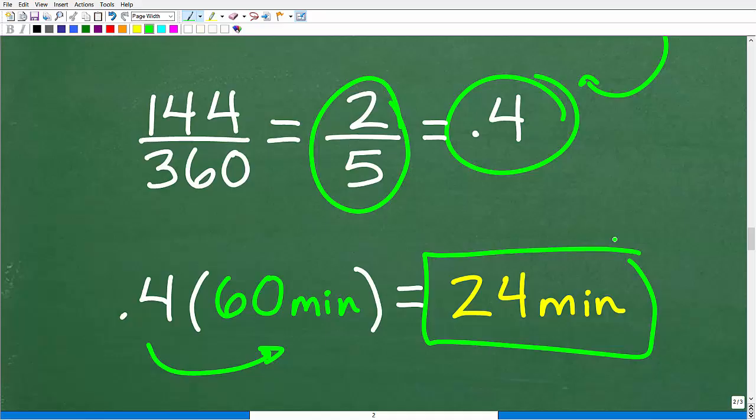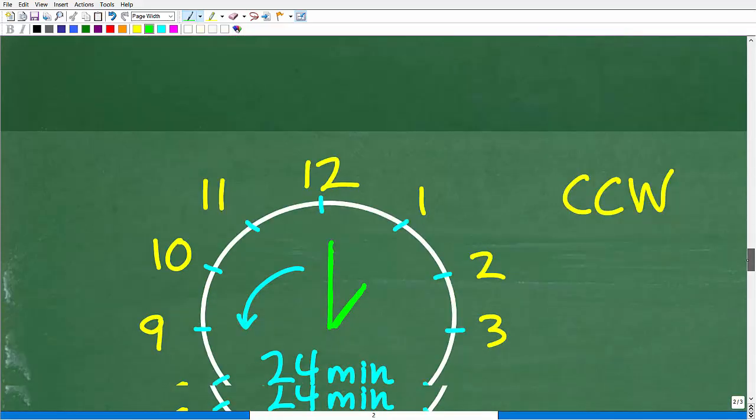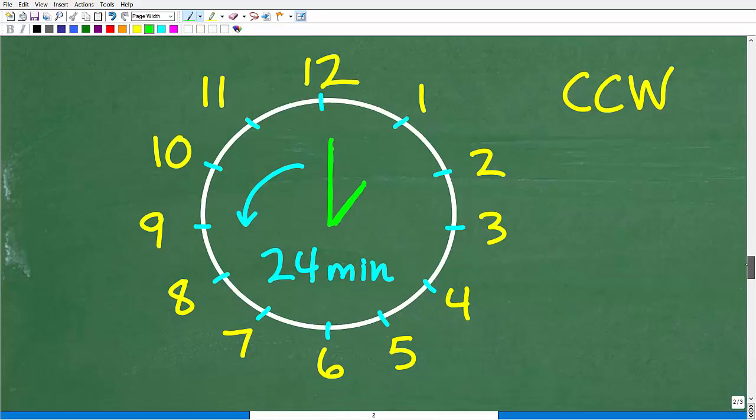So what do we do with this 0.4? It's 0.4 around the circle. Just like we did over here, we took our one-half and we multiplied by 60 minutes. So let's take our 0.4 and multiply it by 60 minutes. So two-fifths of 60 minutes or 0.4 of 60 minutes, just do a simple multiplication here, is 24 minutes. So now we're getting someplace. So 144 degrees is 24 minutes, and now we've got to rotate that minute hand 24 minutes counterclockwise. So we're starting at 1 p.m., and we're going to rotate that minute hand 24 minutes counterclockwise. What is the new time?